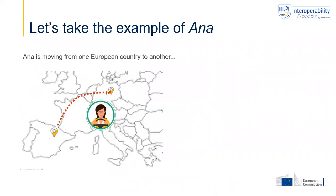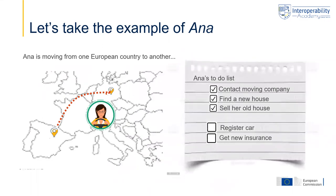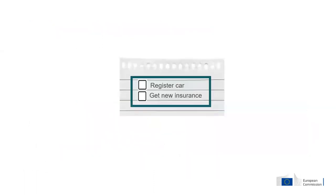Let us take the example of Anna, who wants to move from one European country to another, and for that she has to take care of several things. It's not only about the actual moving — finding a new house, selling her old house, and making sure her belongings are moved from the old to the new place. It's also about many other things she has to take care of, such as her car, which she has to make sure is registered and insured in her new country. To take care of this registration and insurance, Anna has to interact with several organizations, several public administrations, but also her insurance company.